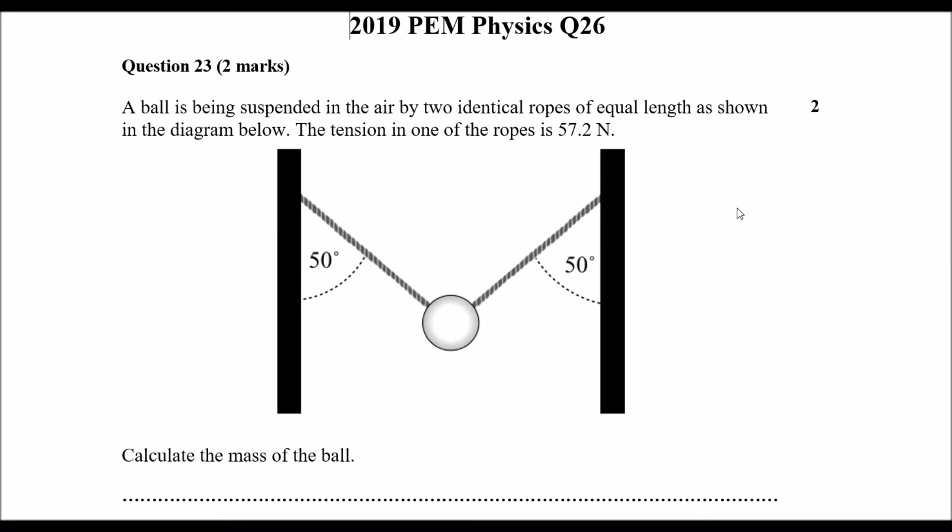We are going to be looking at module 1, inquiry question 2, and also module 2, inquiry question 1. The idea for this is to break vector components into perpendicular parts. So we have a diagonal vector, and we can break it apart into its perpendicular components. So let's actually look at what the question is asking us to do.